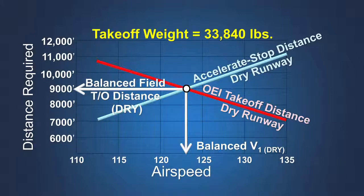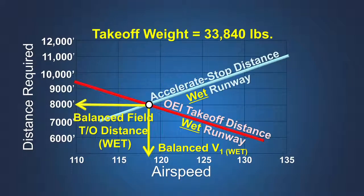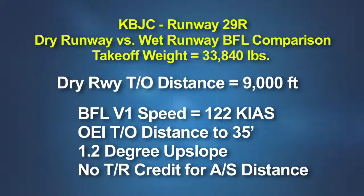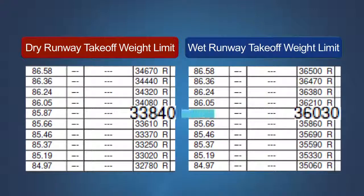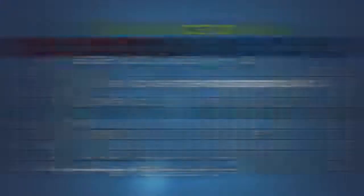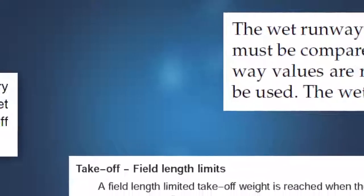At 33,840 pounds, the balanced field takeoff distance is precisely 9,000 feet — the length of runway 29R. However, at this same weight, the balanced field takeoff distance on a wet runway is only 8,000 feet. The reduced screen height and credit for thrust reversers can in some cases produce a situation where the wet takeoff performance appears better than dry runway performance, leading to greater calculated takeoff weights. The certification rules address this by specifying that the accelerate stop distance and the one engine inoperative takeoff distance must be the greater of either the dry runway or wet runway distances.